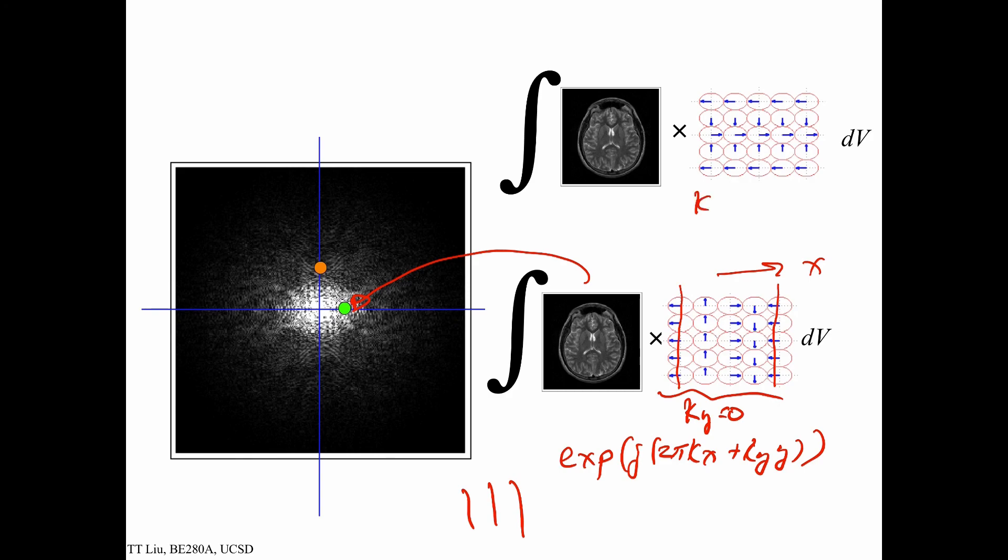Here we have kx equals 0. And so if you look at how these phasors vary, there's no variation of these phasors in the x direction. If I take any row, the phasors are pointing in the same direction. And there's only variation in the y direction. In this case, there's one period going from here to here. And so that's the variation that we have. So we take this phasor field and multiply by our object, we integrate, and we get our k-space value.